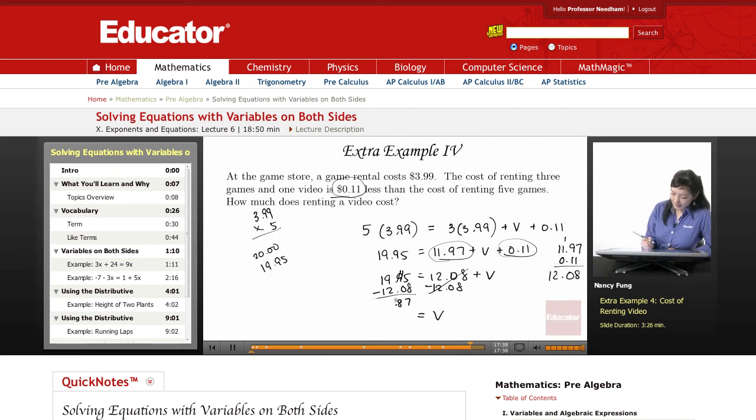I borrowed, so that's an 8. And then I didn't borrow again, so 9 minus 2 is 7. So $7.87 - the cost of renting the video would be $7.87.